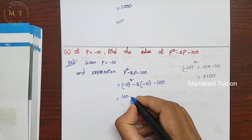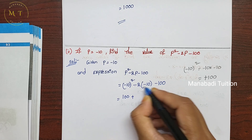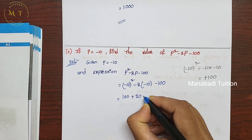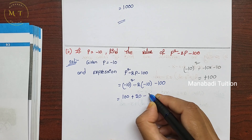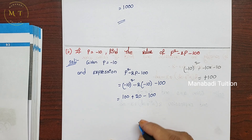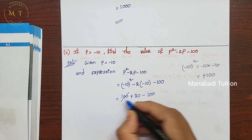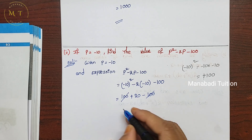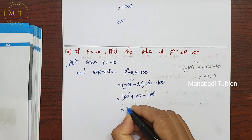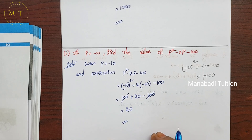Minus into minus is plus. 2 times 10 is 20. Next minus 100. So plus 100 minus 100 cancel. You have 20. So the answer for this part is 20.